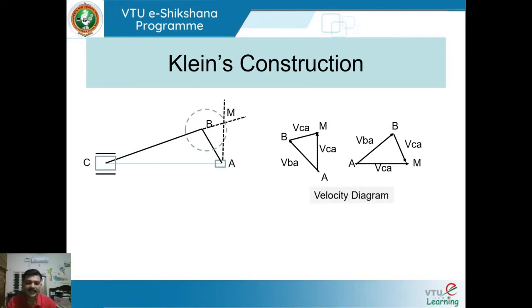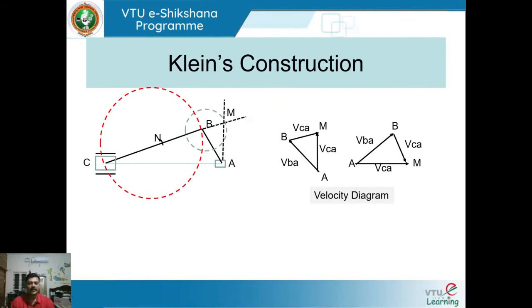Now let us see how to draw the acceleration diagram using Klein's construction. Mark the midpoint of connecting rod CB and label it N. Keeping N as center and NB as radius, draw a bigger circle. This bigger circle intersects the smaller circle at two points, which we name O and P.